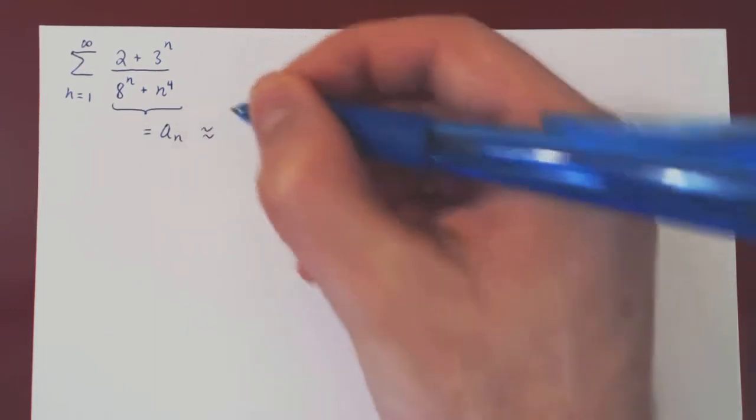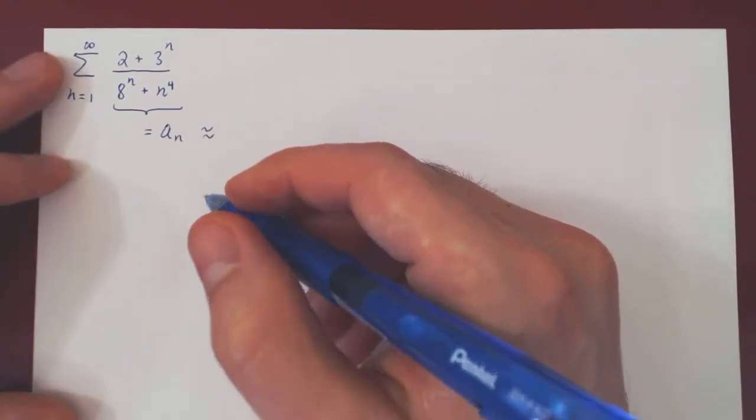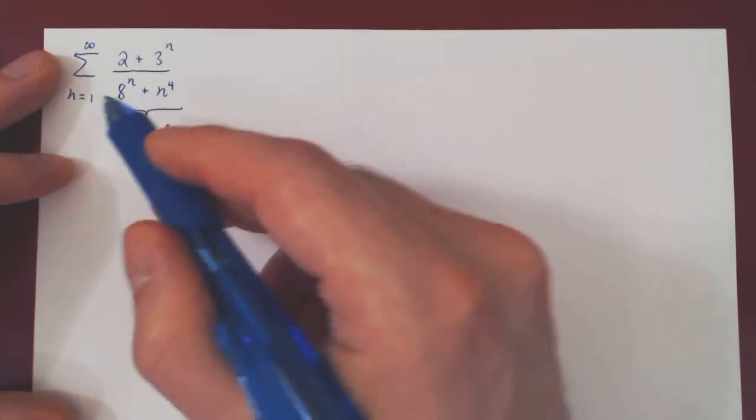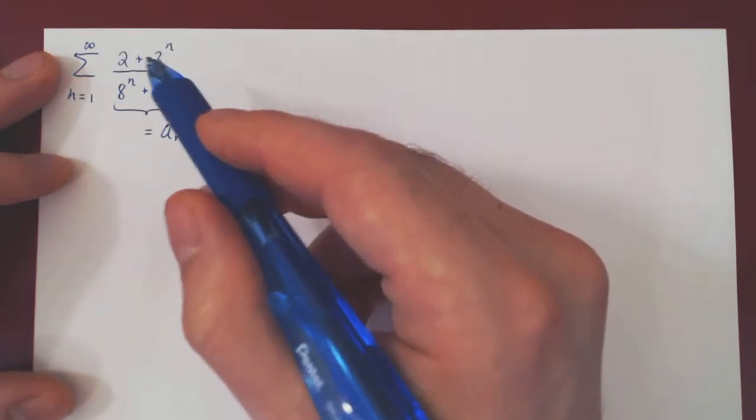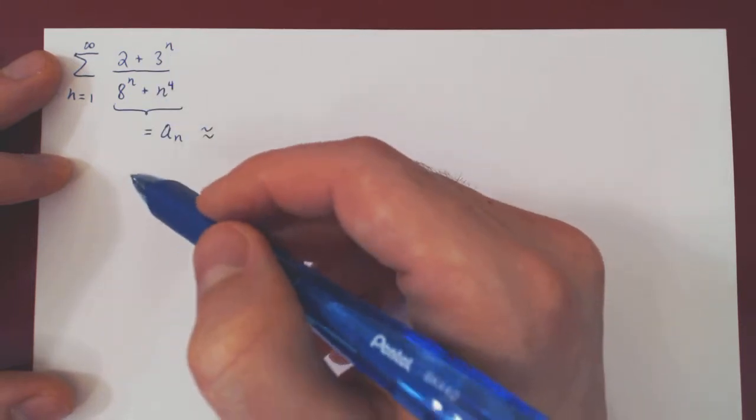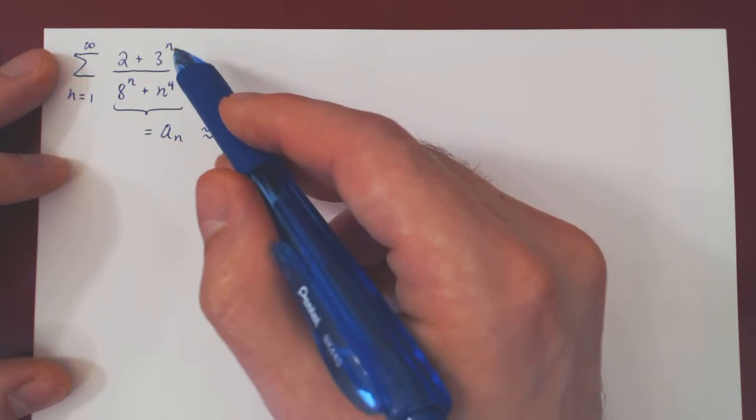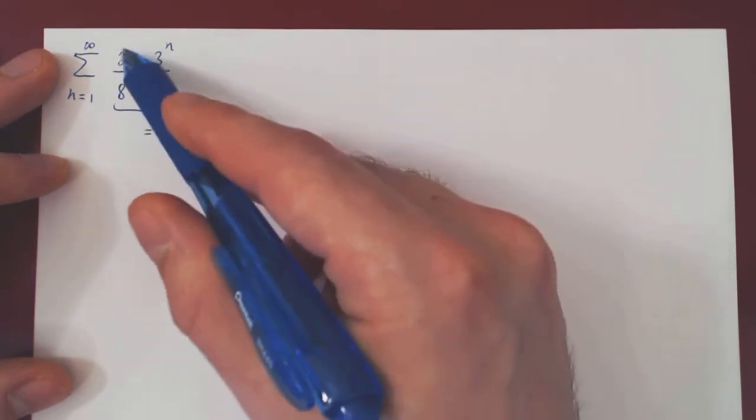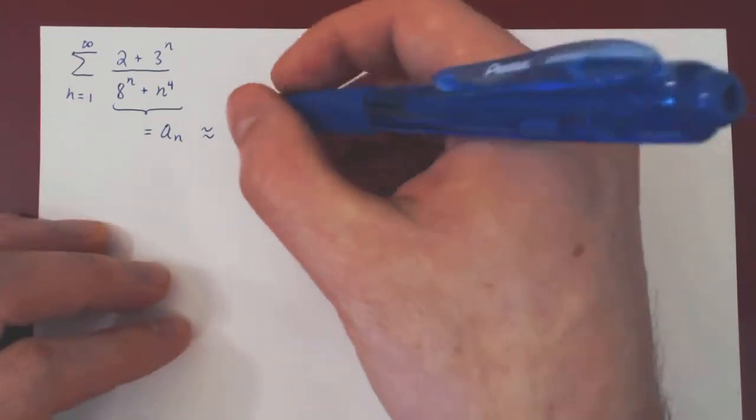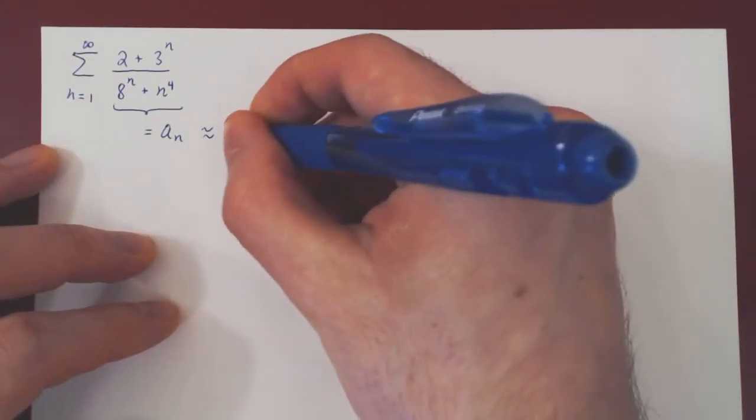As always when we want to apply the limit comparison test, all we have to figure out is what is a_n roughly when n is large. We have a fraction, we simply have to single out the dominant term on top and on the bottom. When n is large, clearly 3 to the n is way bigger than 2. 3 to the n goes to infinity, 2 is a constant, so our dominant term on the numerator is 3 to the n.